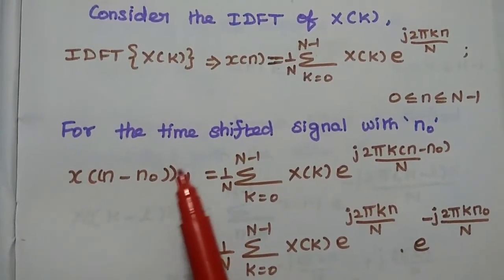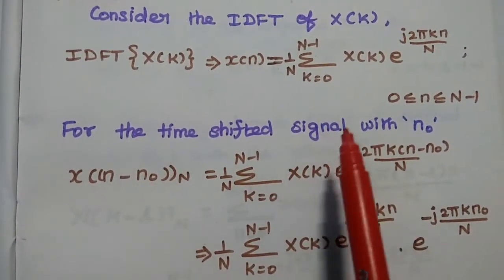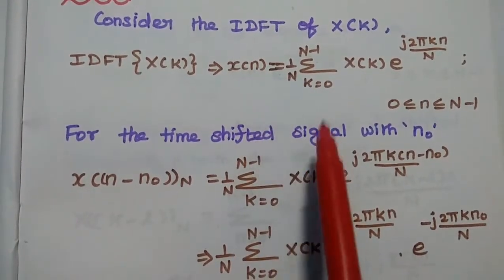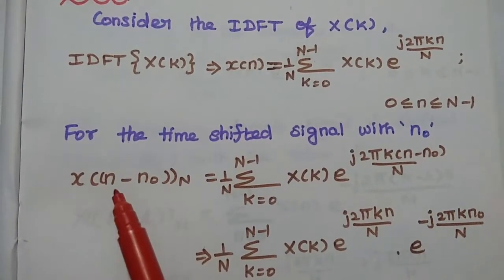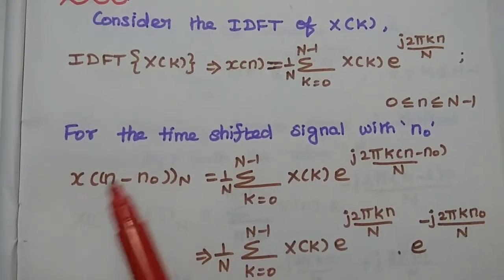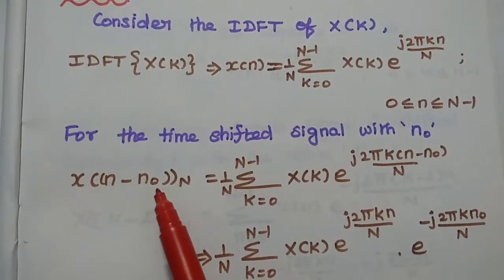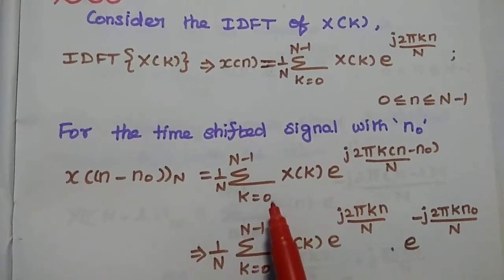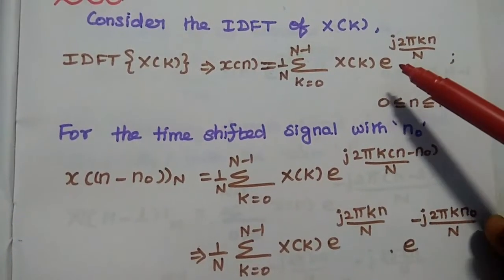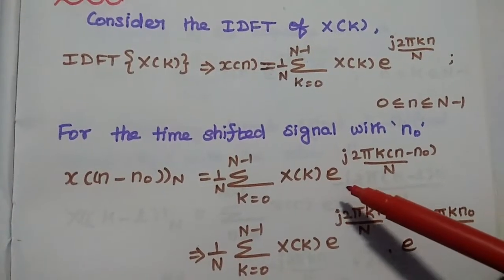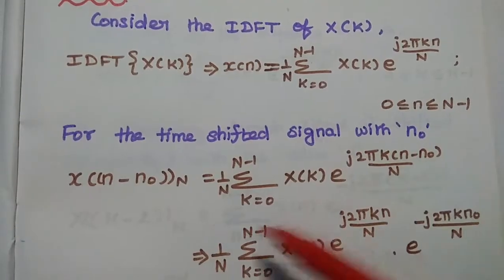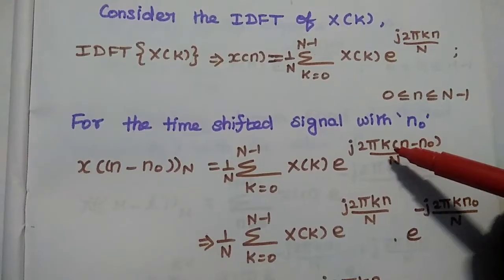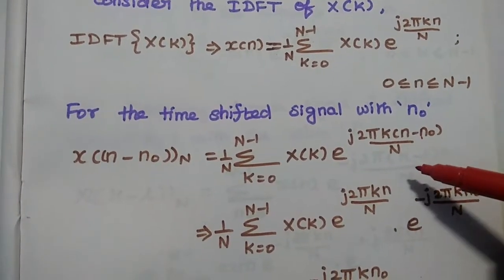In the next step, we substitute the time shifted signal by replacing n with n minus n₀. So now we are shifting the time domain signal by n₀. This can be written as x((n−n₀)) mod N, which equals (1/N) summation k=0 to N−1 of X(k) × e^(j2πk(n−n₀)/N).